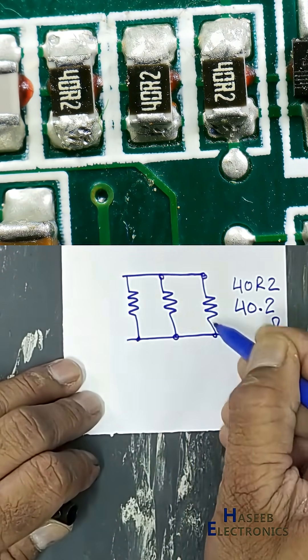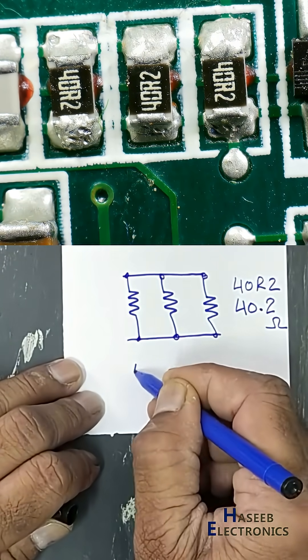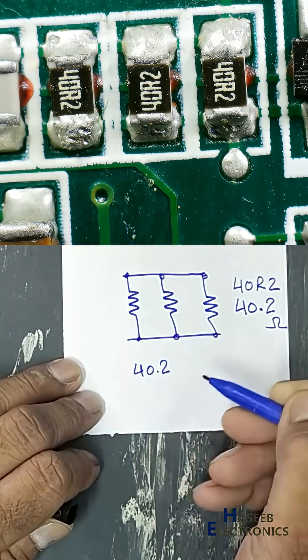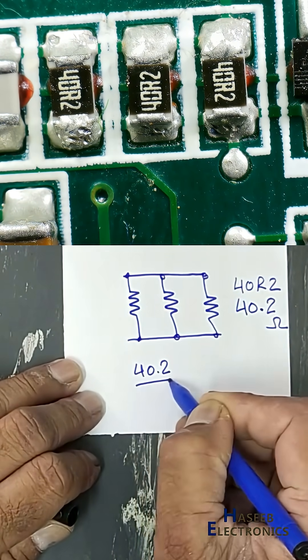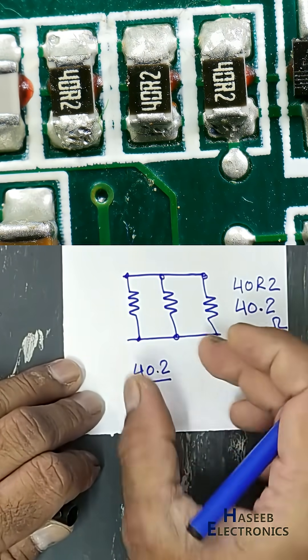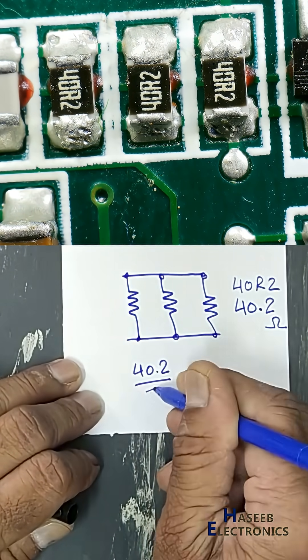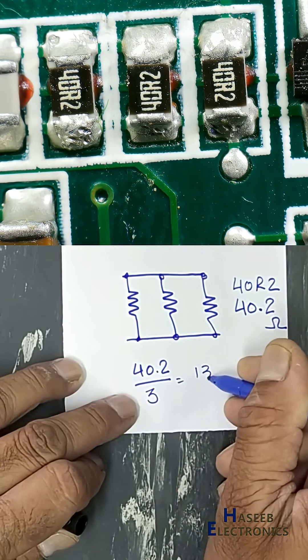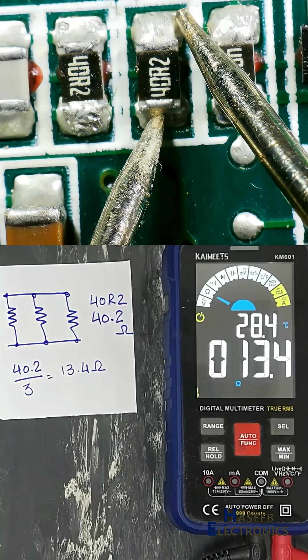Resistor value of one resistor is 40.2 divided by number of resistors: one, two, three. How many resistors are in parallel? The result is 13.4 ohms.